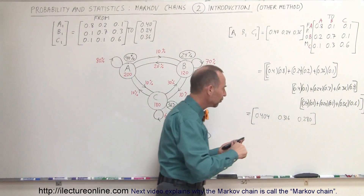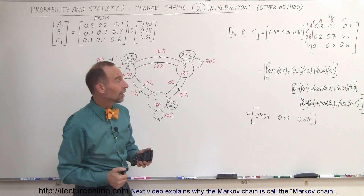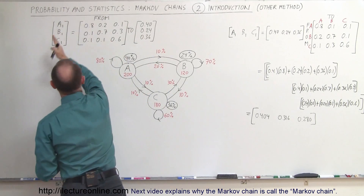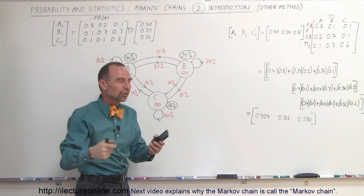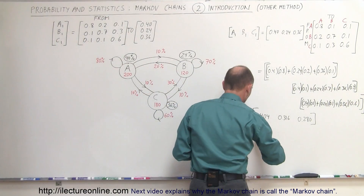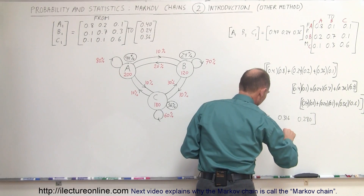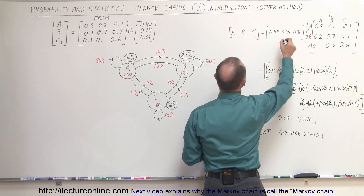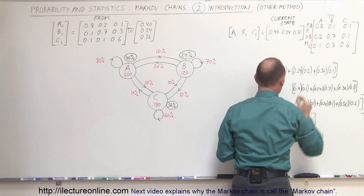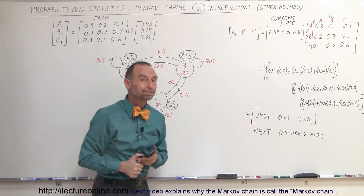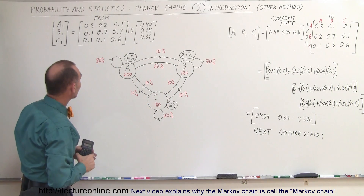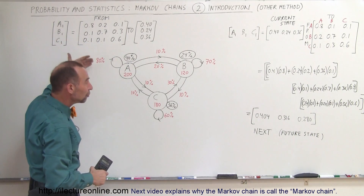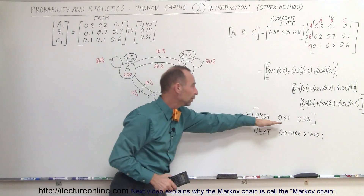So that would be the future state — not the current state, but the future state. This is the current state; that's the next state. So either we call it the next state or the future state. Notice we get the exact same result. We multiply this times this and we get A, B, and C in the future state, and we get the exact same answer.